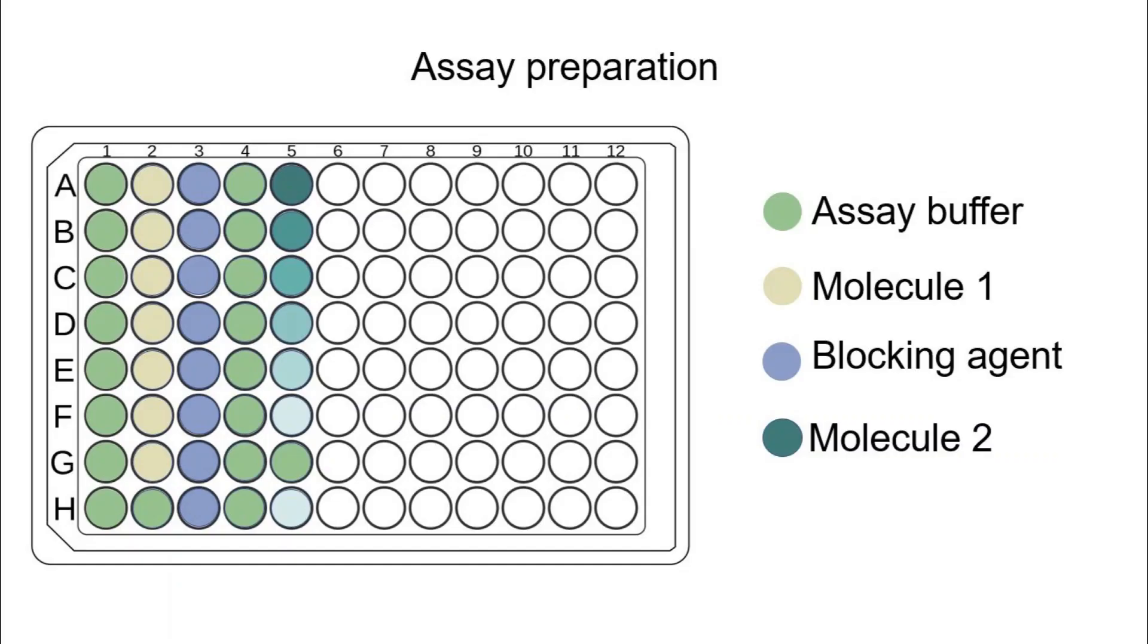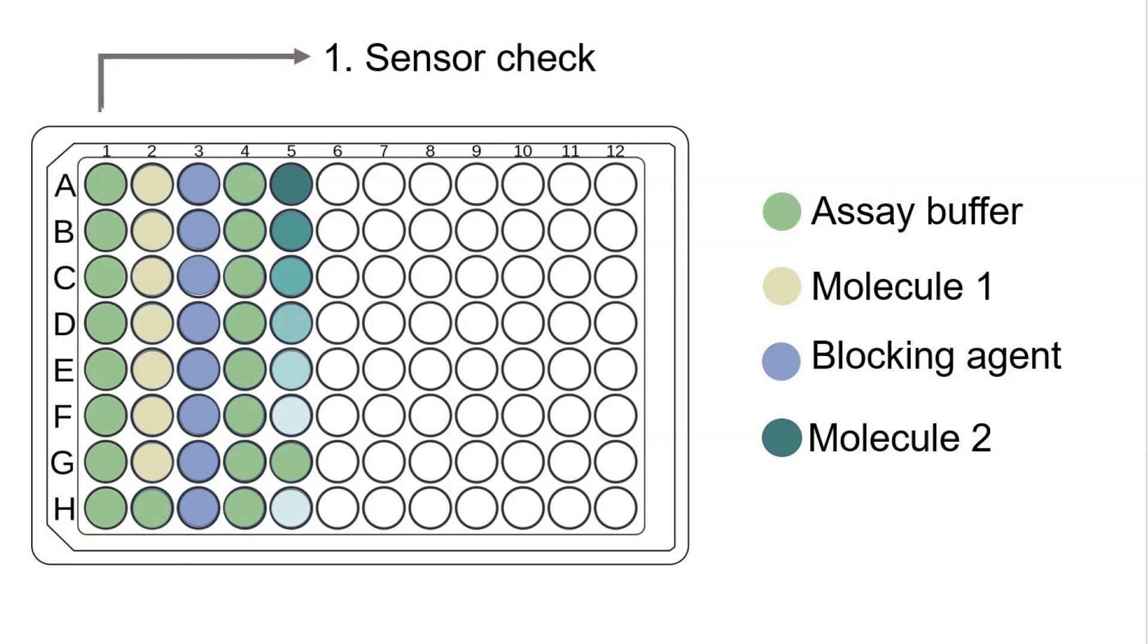There are six steps in a standard biolayer interferometry experiment. First, the sensors are dipped into buffer-only wells to enable equilibration of the sensors.